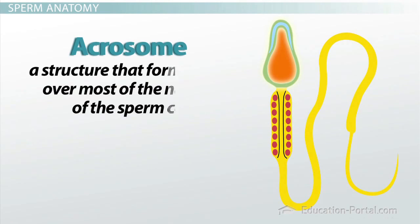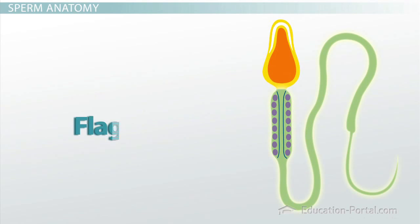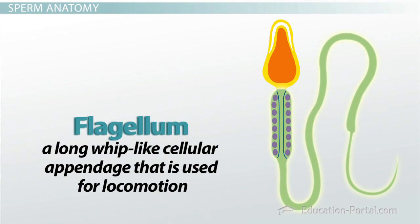The acrosome is a structure that forms a cap over most of the nucleus of the sperm cell. The main job of the acrosome is to penetrate the outer layers of the ovum so that the sperm can get inside. The flagellum is a long whip-like cellular appendage used for locomotion. A sperm cell uses its flagellum in a whip-like fashion, lashing it back and forth to propel the sperm forward.